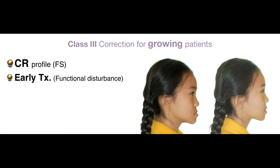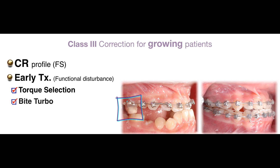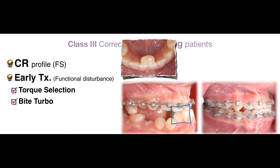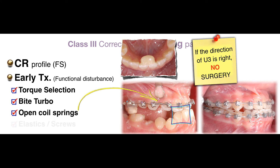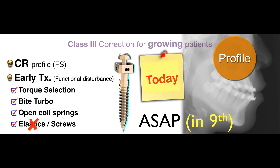Conclusion: if you have a profile like this, if you have a functional shift, look at the CR profile. If the CR profile is good, then maybe consider early treatment to fix the functional disturbance. For this case it was deep bite and bilateral impaction. So use bi-turbo anterior and posterior, open coil spring to open the space. If the direction of the canine is favorable, no surgery. For this case, I would not suggest you use Class 3 elastic. If I were to retreat this case, I would use a Buccal Shield appliance as soon as possible.